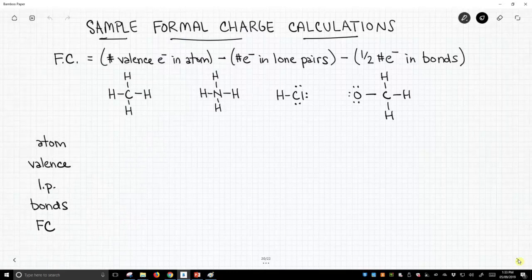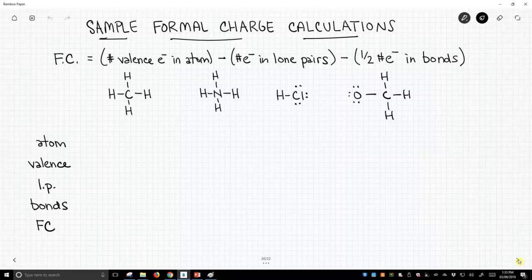So at the very top of the screen we have our equation. The formal charge is equal to the number of valence electrons in an atom, and then from that number we subtract the number of electrons that we have in the lone pairs, and then we take away one-half of the number of electrons in the bonds. So let's work through these simple examples on the screen and see if we can reinforce this idea.